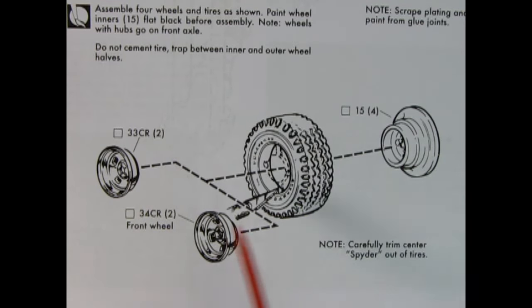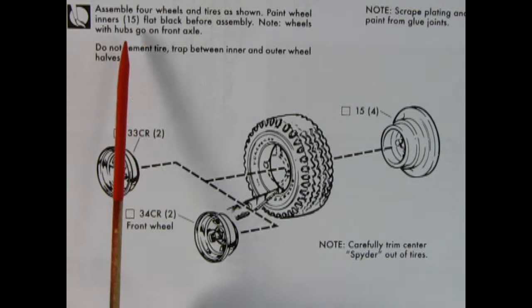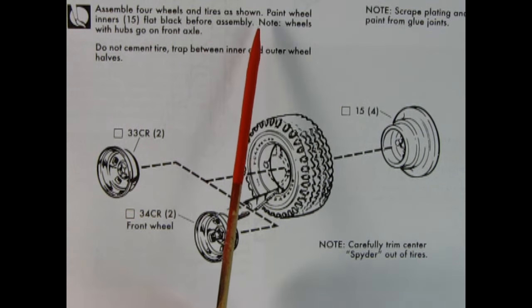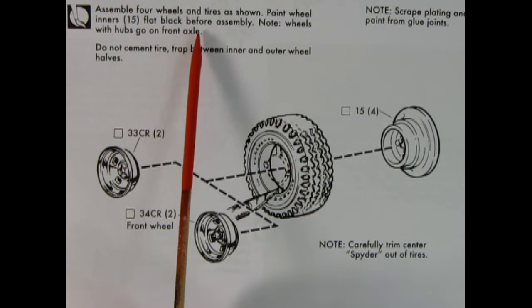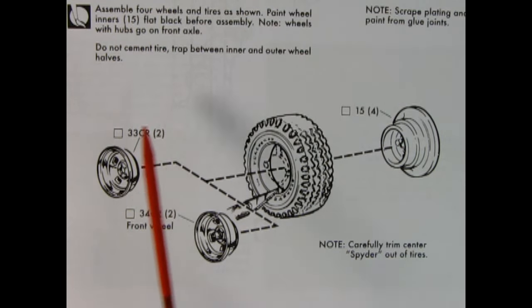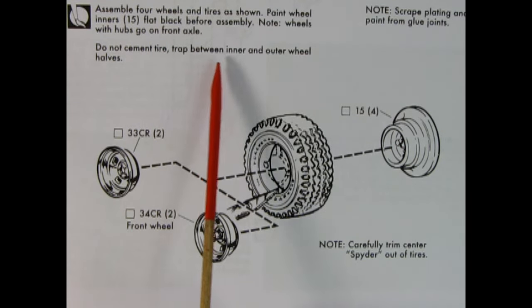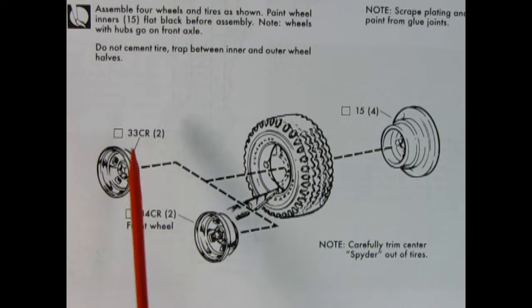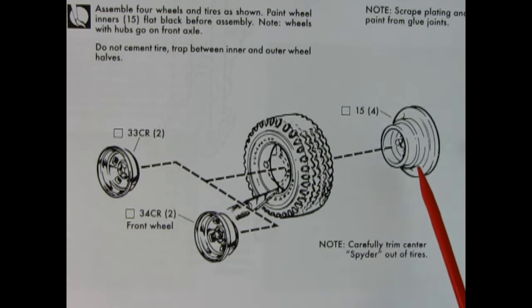Step two shows our wheels and tires being assembled. It says: assemble four wheels and tires as shown, paint wheel inners flat black before assembly. Note, wheels with hubs go on front axle. Do not cement tire, trap between inner and outer wheel halves, and scrape plating. We also have to cut out the spider from the center of the tires.